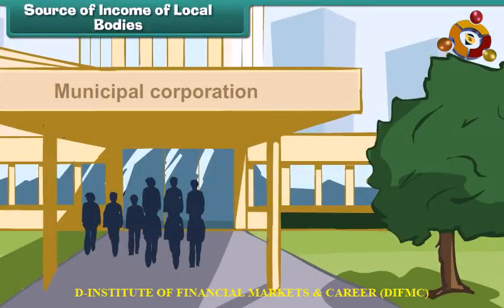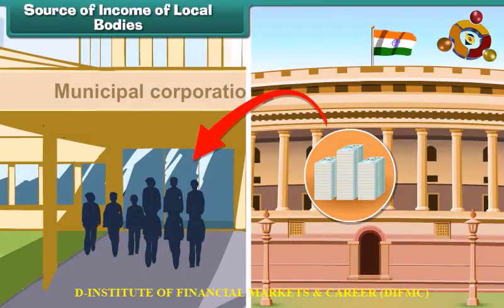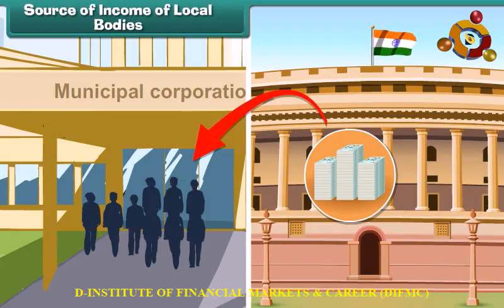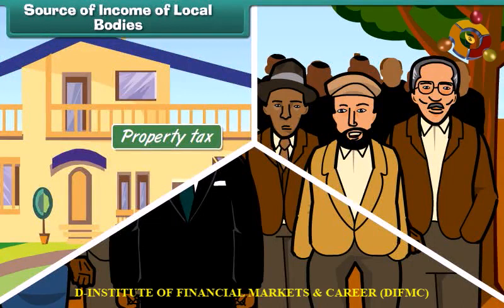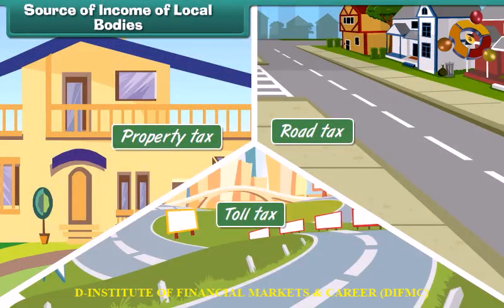Local bodies get money for provision of services from the respective state governments. The state governments in turn get the money from their citizens through property taxes, road taxes, and toll taxes.